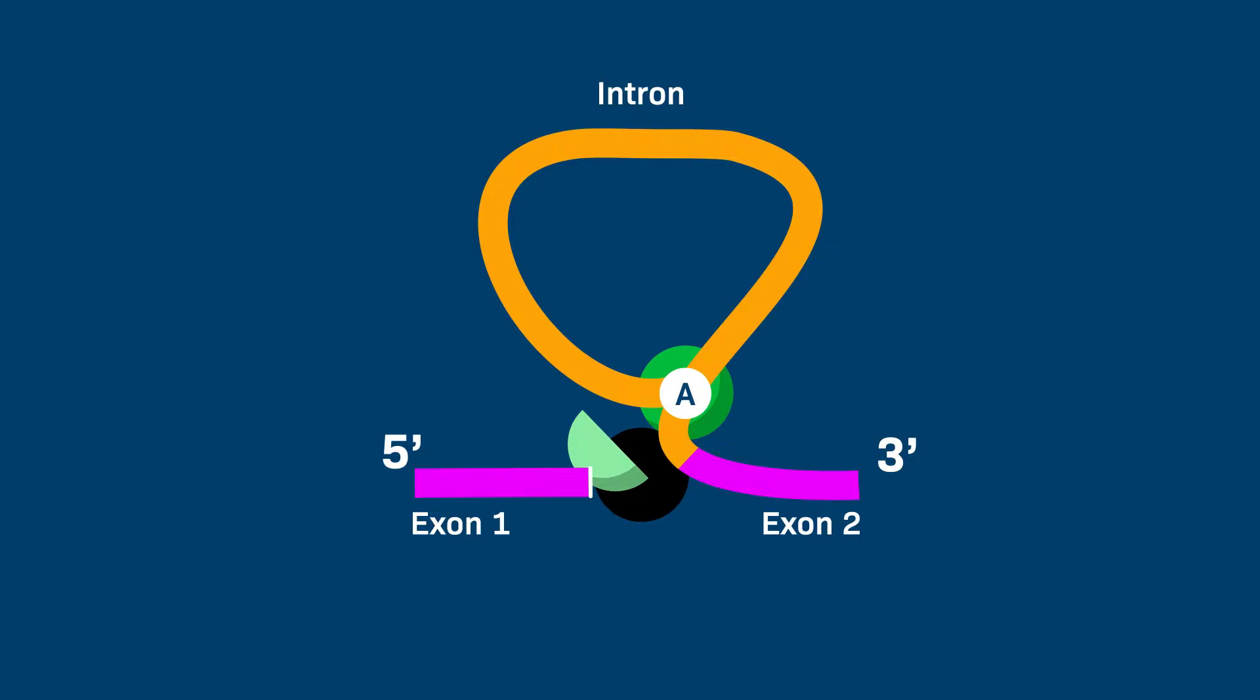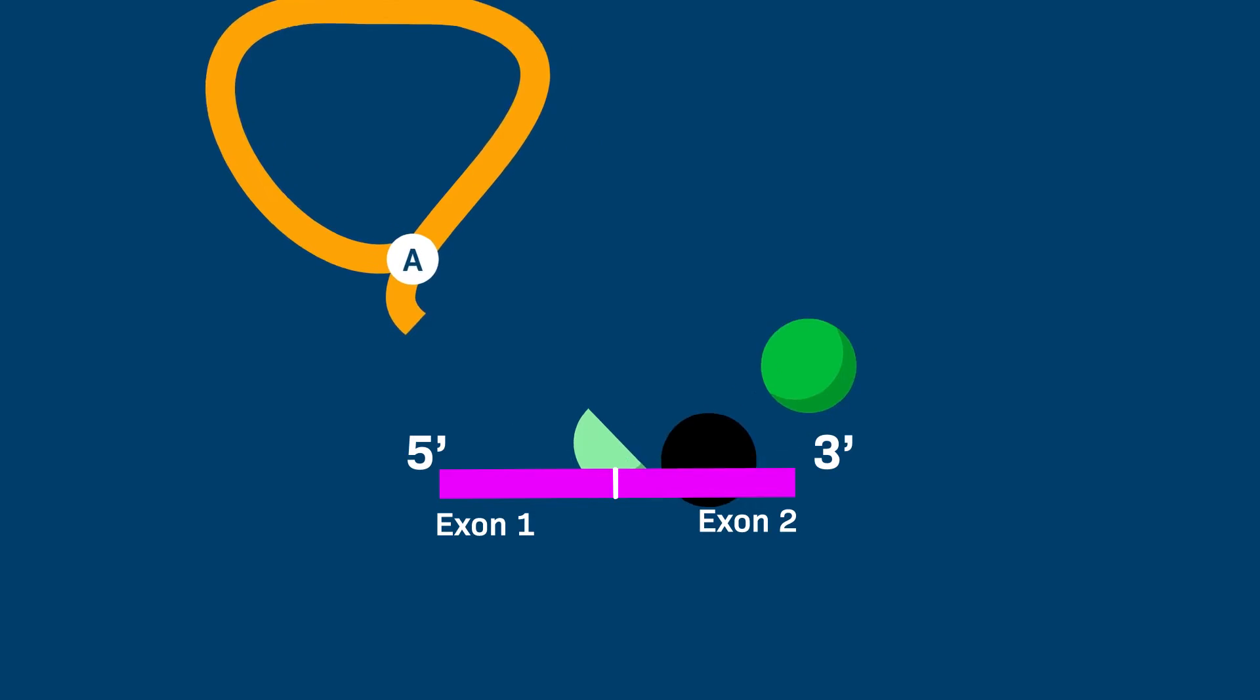The spliceosome rearranges to bring together the exons, allowing the 3' hydroxyl group of the first exon to react with the 5' end of the other. After the two exons are joined into a continuous sequence, the lariat is released and degraded.